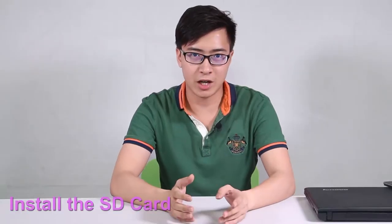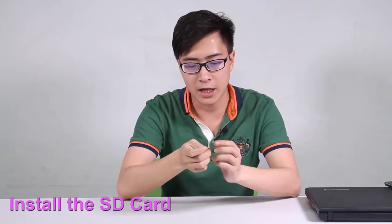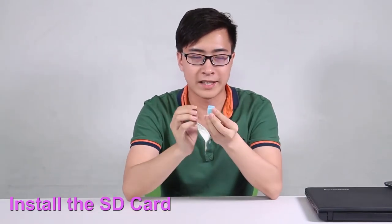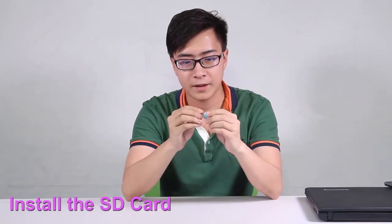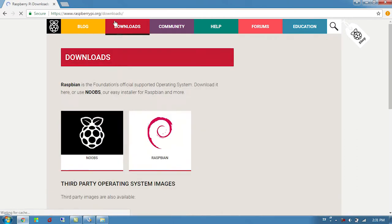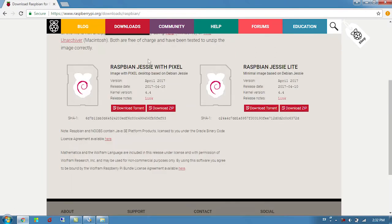While the battery is charging, you can now set up the microSD card. Plug the microSD card into a USB microSD adapter, then plug the adapter into your computer. Download the latest Raspbian from raspberrypi.org. Go to download Raspbian, and here download Raspbian Jessie with Pixel and download the zip.